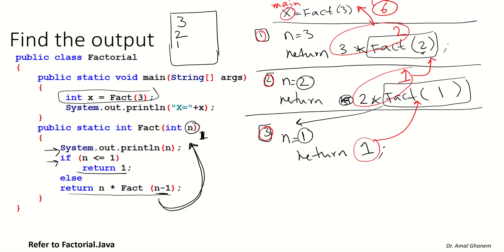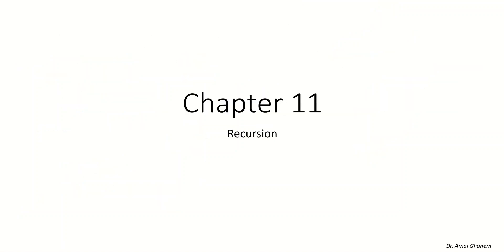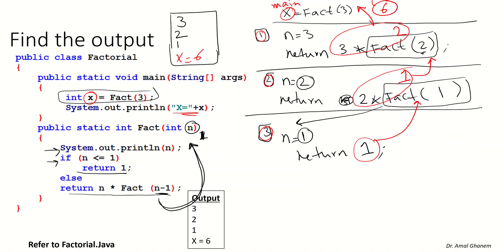We go back to main and the value of x will be 6, and then we output the value of x. So the output will be: 3, 2, 1, and then x equals 6.